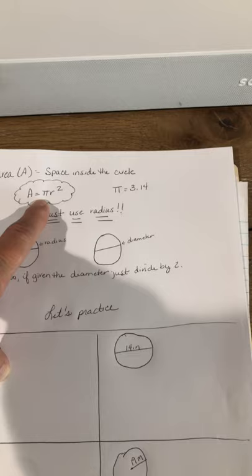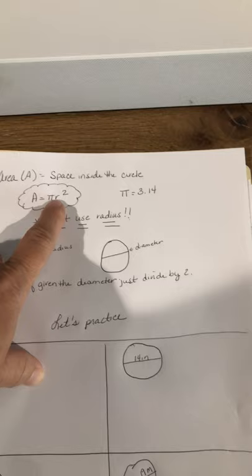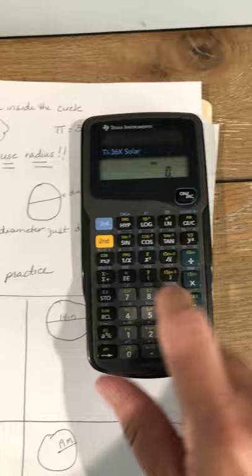We're going to use pi, that's 3.14. Don't use the pi button on your calculator, it kind of messes it up a little bit. And then we're going to use r squared, the radius squared. So remember on our calculators, the squared button is this button right there. So we're going to use that today as well.